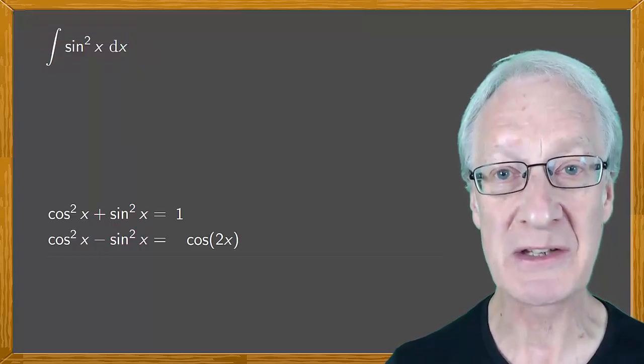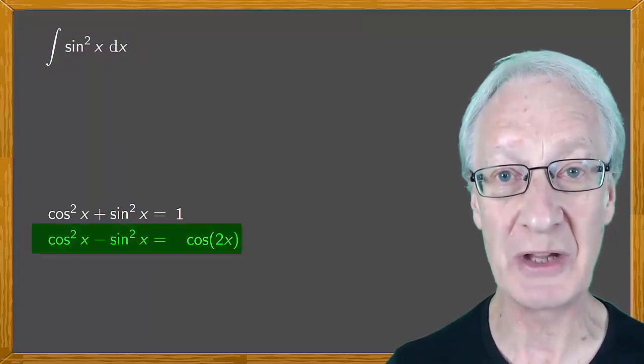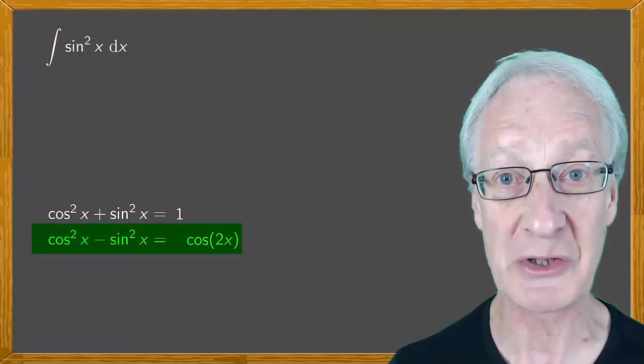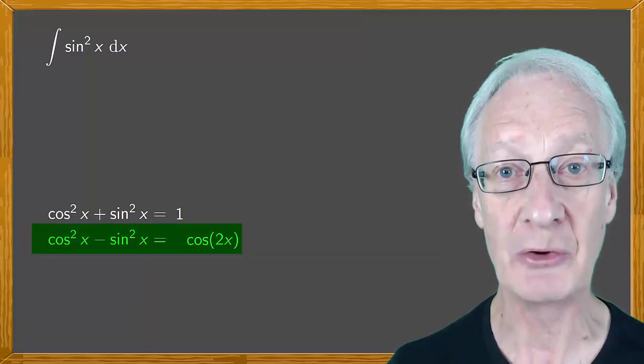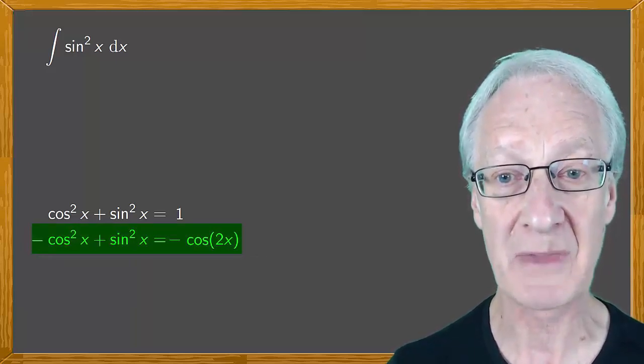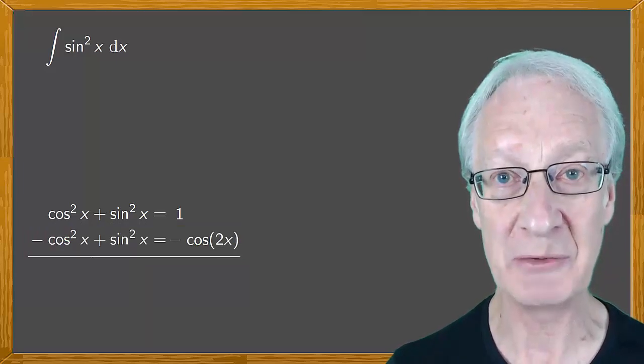So the thing to do is to change the sign of the equation for cos 2x. In other words, change the sign of all the terms in it.